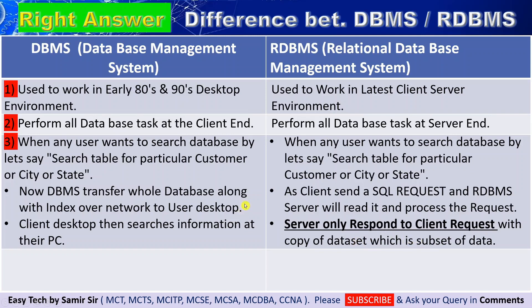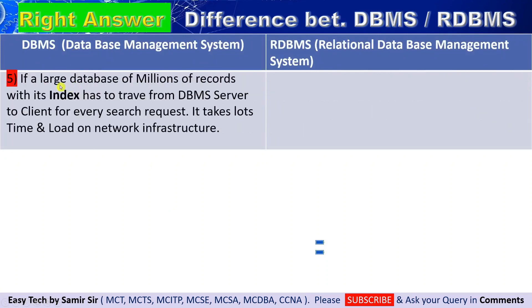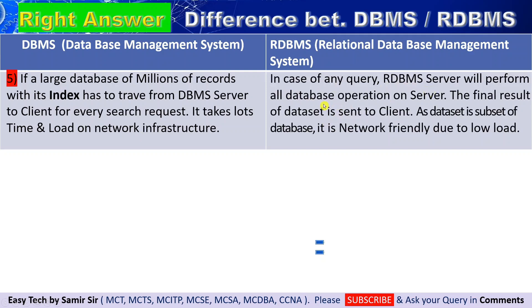In DBMS, actual data along with the index is copied from the server to the client. Whereas in RDBMS, actual data and the index never leave the server. If a large database with millions of records and an index file has to travel from the DBMS server to the client for every search request, it takes a lot of time and puts a heavy load on the network infrastructure. In RDBMS, the server performs all the database search and other operations on the server, and only the final results — a subset of data — are sent to the client, making it network-friendly and low on load.